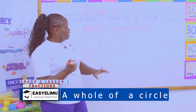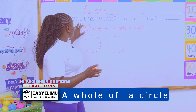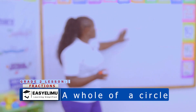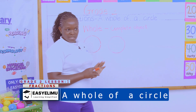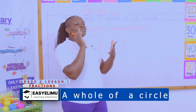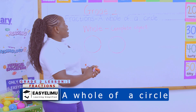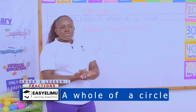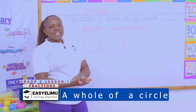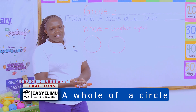So, what have we learned today? Today you have just learned a whole. What is a whole? A whole is a complete object — something that is full and does not have any part missing. That was nice having you around. I hope to see you in the next lesson. Thank you.